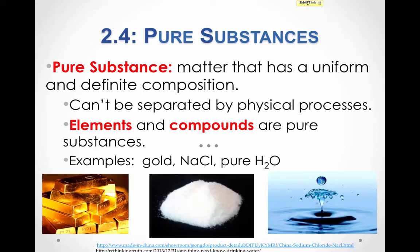For example, the element gold is a pure substance — every particle in a brick of pure gold is a gold atom. NaCl, or table salt, is an example of a compound, which is a pure substance; every particle in NaCl is an NaCl particle with no other types of particles. And pure water is an example of a compound — every particle in pure water is an H2O particle with no other kinds of particles.